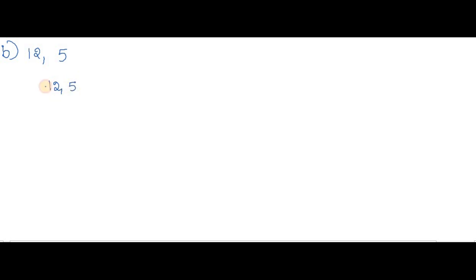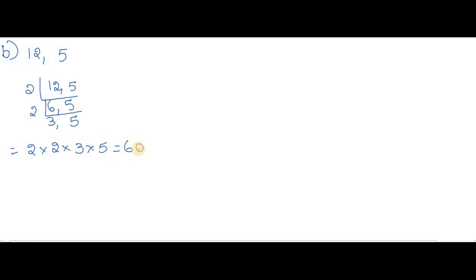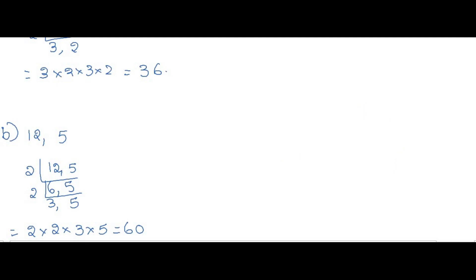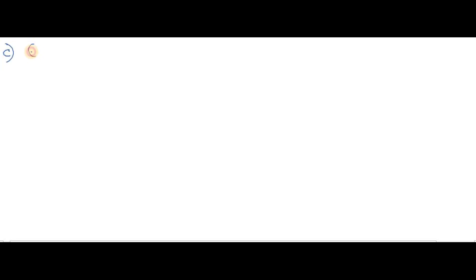As five is a prime number we can't divide it further. Twelve will go in two table: two sixes are twelve, and five comes as it is. Again two table: two threes are six, five comes as it is. So we get two into two into three into five: two twos are four, four threes are twelve — wait, six fives are thirty. So the LCM of 12 and 5 is 60.